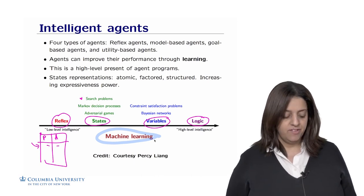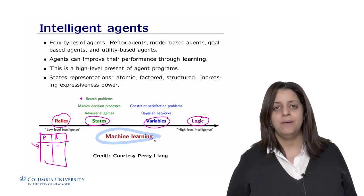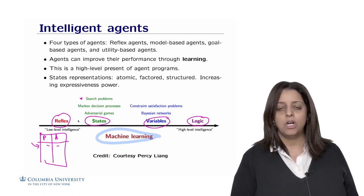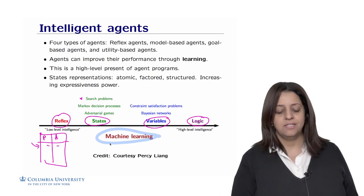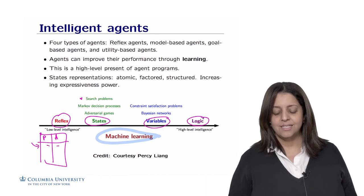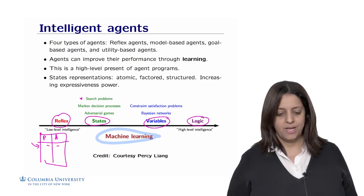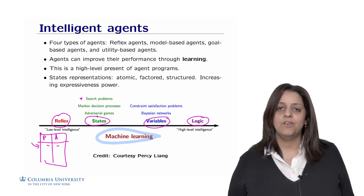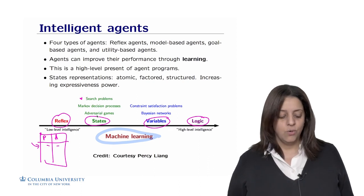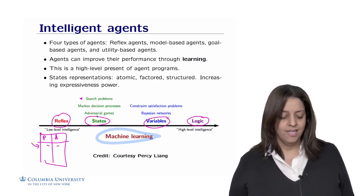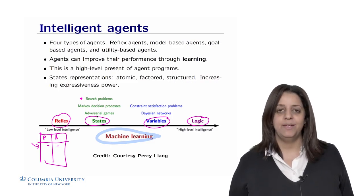For example, a spam filter that predicts whether an email is spam would be a reflex agent, while the expressiveness of knowledge discovered by machine learning algorithms can go as high as logic expressions, first-order logic, and natural language processing. This was it for intelligent agents today. Next time, we'll start the topic of search and games, modeling the world with atomic states — including search problems and adversarial games.